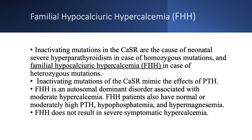The patient with FHH will have either normal or moderately elevated PTH — normal is up to about 50, so PTH here might be 45 or 60. You have hypophosphatemia because PTH is phosphaturic. You also have hypermagnesemia, and you do not have severe symptomatic hypercalcemia.